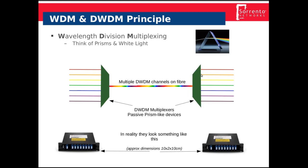Red comes into the fibre and then comes out at the red connection; orange goes in and comes out at orange; purple goes in and comes out at purple, and so on. In reality, these devices are approximately 10 by 2 centimetres. You can see the optical fibre connectors — the main fibre connector here — and the individual colour ports, matching the analogy fairly well.